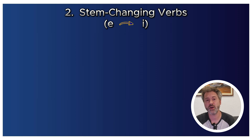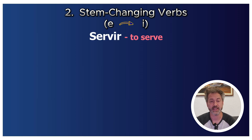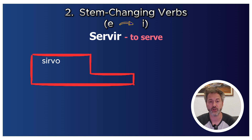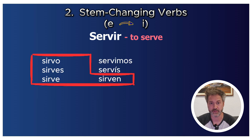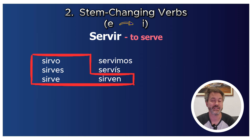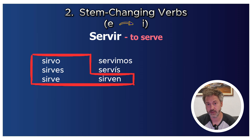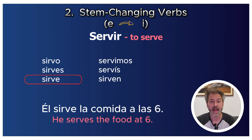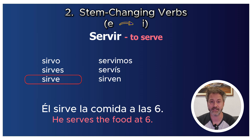Another E→I verb is servir: instead of 'yo servo,' we say 'yo sirvo.' Full conjugation: tú sirves, él/ella/usted sirve, nosotros servimos, vosotros servís, ellos/ellas/ustedes sirven. For example: 'Él sirve la comida a las seis' — He serves the food at six.